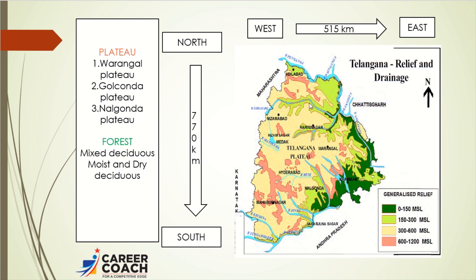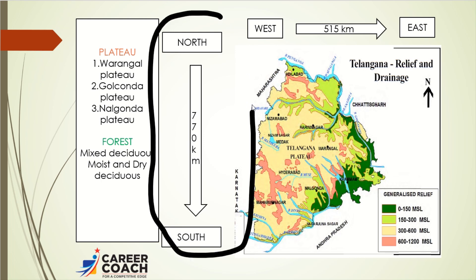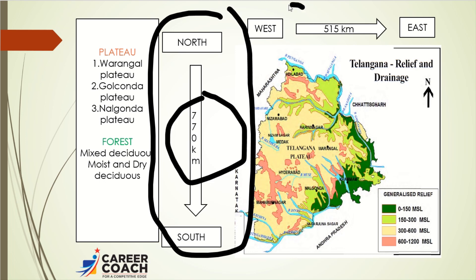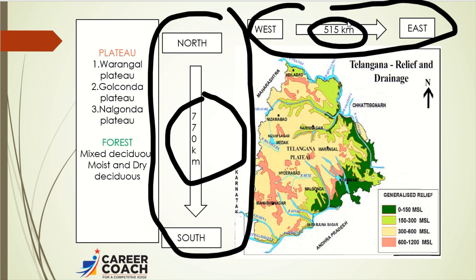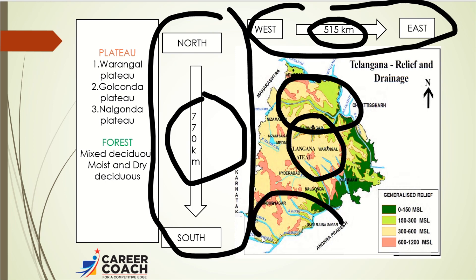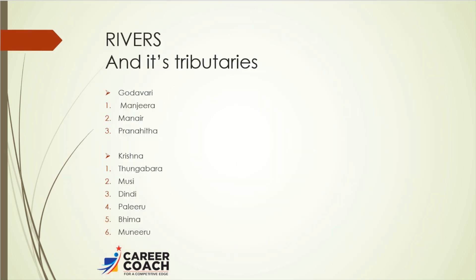Looking at the physiological features of Telangana state, the distance from north to south is 770 kilometers and from west to east is 515 kilometers. Telangana is divided into three different plateaus: the Warangal Plateau, the Golkonda Plateau, and the Nalgonda Plateau. The types of forests in Telangana — important for central and state level exams — are mixed deciduous forest and moist and dry deciduous forest.